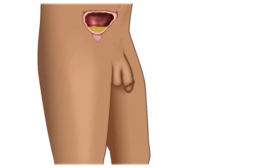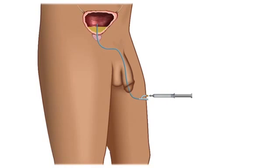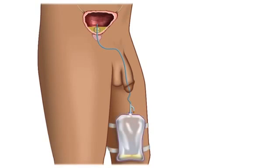Indwelling urinary catheters are medical devices utilized by patients in hospital, home, nursing home, and hospice settings to manage bladder issues and relieve urinary retention. The most common urinary catheter in use is the Foley indwelling catheter, which is comprised of a tube inserted through the urethra or a surgically placed port directly into the bladder and held in place by an inflatable balloon. Although these devices were originally designed for short-term use, indwelling catheters are now used for years by some patients.